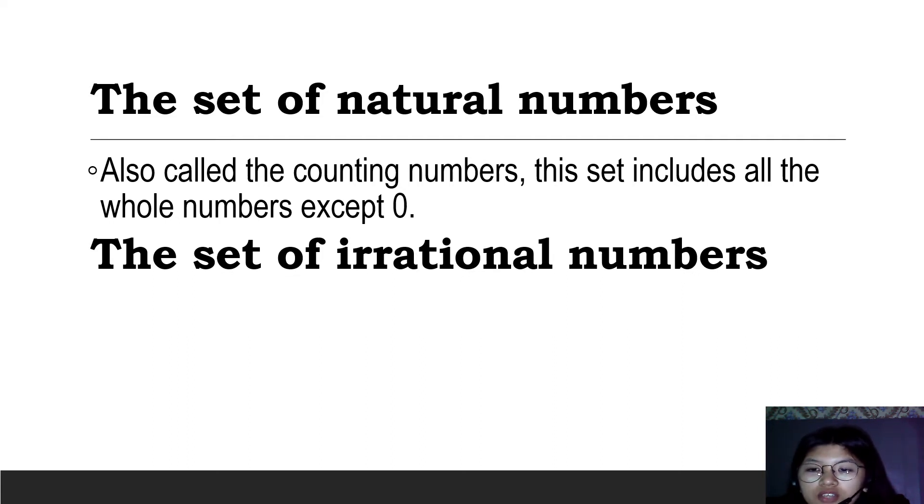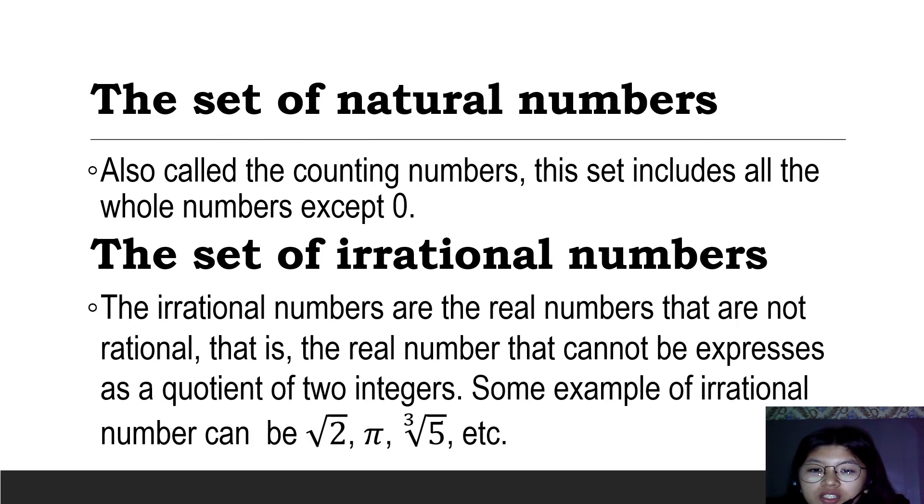The set of irrational numbers. The irrational numbers are the real numbers that are not rational. That is, the real numbers that cannot be expressed as a quotient of two integers. Some examples of irrational numbers are square root of 2, pi, cube root of 5, etc. Numbers that are non-repeating decimals are considered irrational numbers.